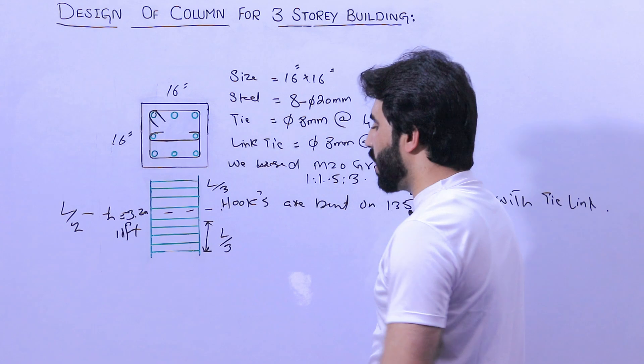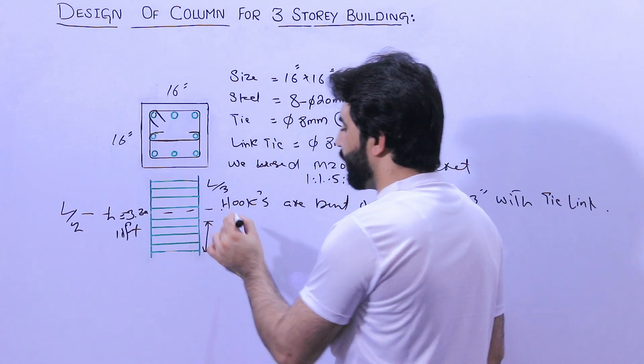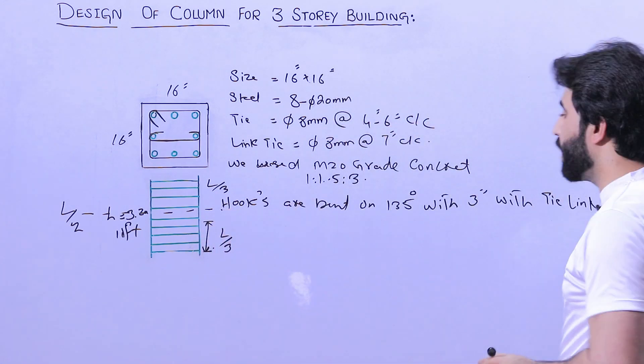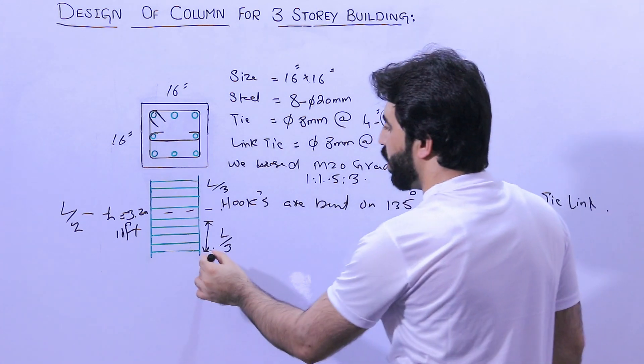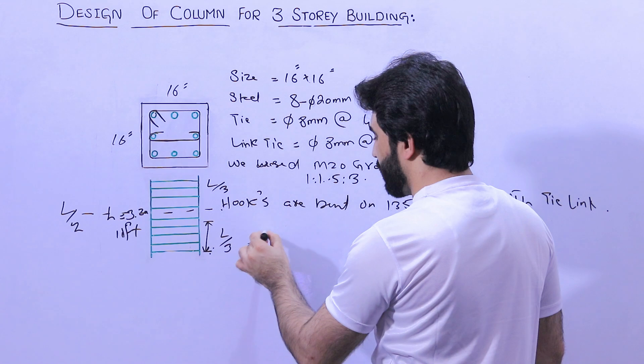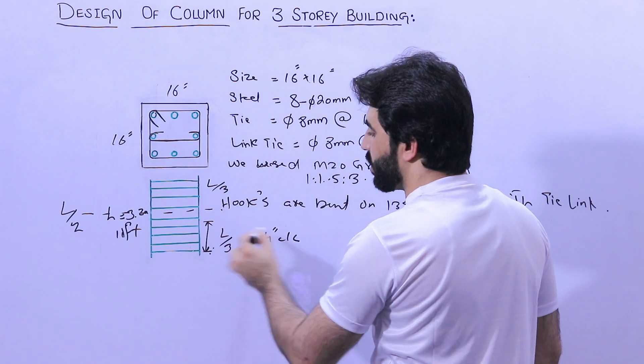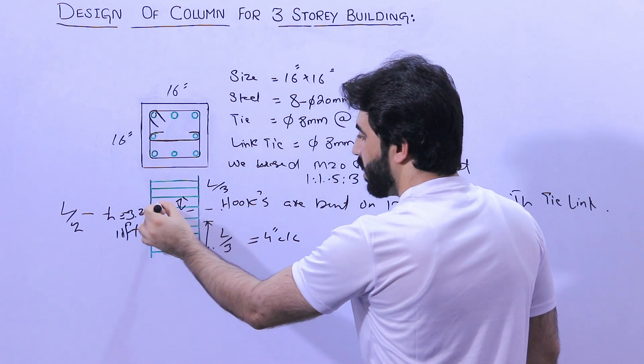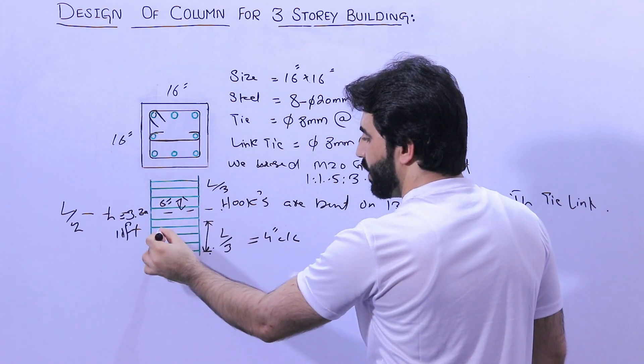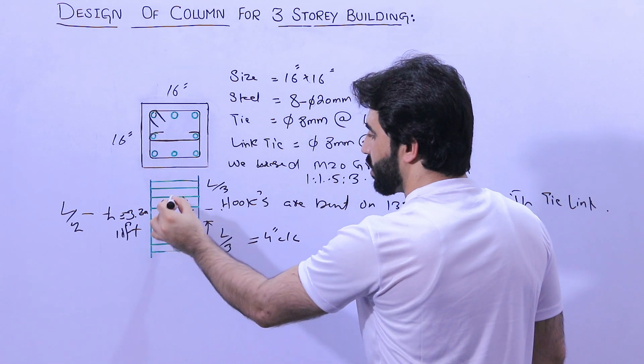After L by 3, we increase the spacing of ring which is 6 inches. At the bottom and also at the top it was 4 inches center to center. After L by 3 we used here 6 inches, and here we used 4 inches center to center.